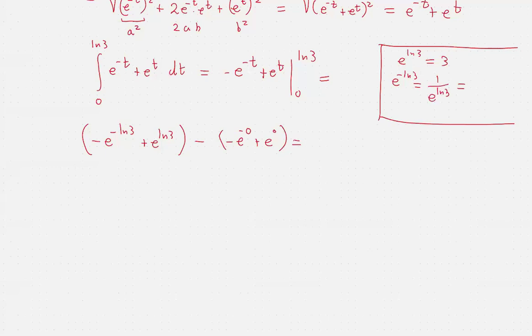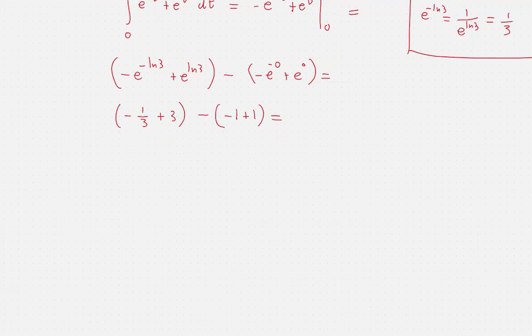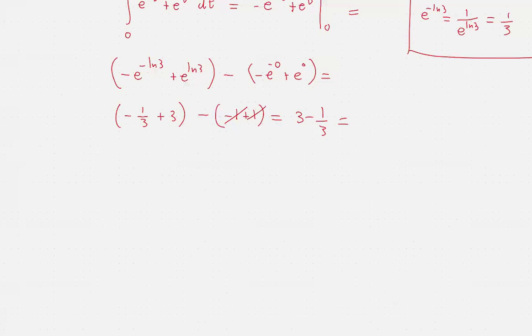So we will have -1/3 + 3 - (-1) + 1. So that is going to be, so this cancels with that. And finally, we get 3 - 1/3, which is the same thing as 9/3 - 1/3, which is 8/3. So the integral has been computed and all the simplifications have been carried out. And that's the final answer. Thanks for watching.